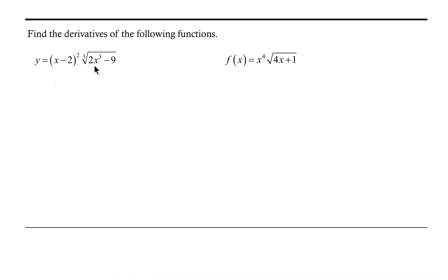Let's remind ourselves that the product rule — the derivative of a product f times g — is the derivative of the first function f times the second function g, plus the derivative of the second function g times the first function f.